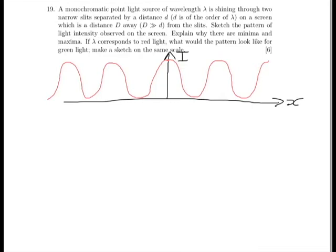We know from Young's double slit experiment that lambda, the wavelength, is equal to a, the separation of the slits, multiplied by x, the separation of the fringes on our fringe pattern, divided by the distance between the source and the screen, or rather between the slits and the screen, which is big D here.